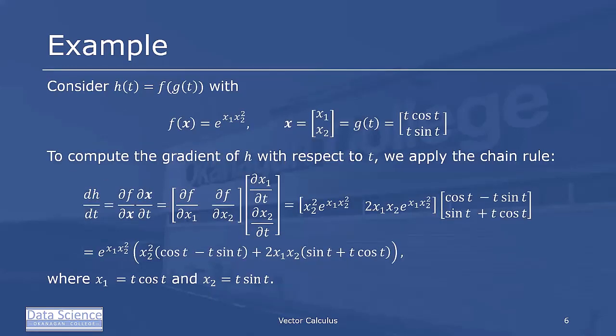The final example here, we're going to consider h of t which is f of g of t, where f of x is equal to e to the x1 x2 squared. x is the vector x1 x2, which we could call g of t. And it's given by t cos t, t sin t. So to compute the gradient of h with respect to t, we apply the chain rule. dh dt is equal to df dx times dx dt.